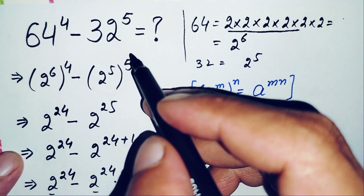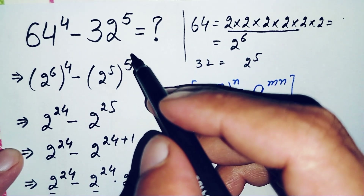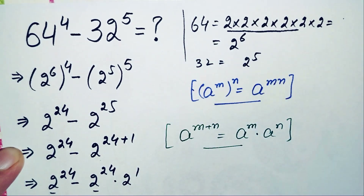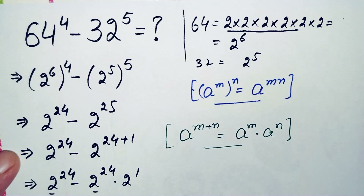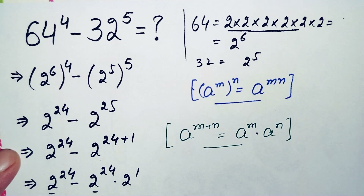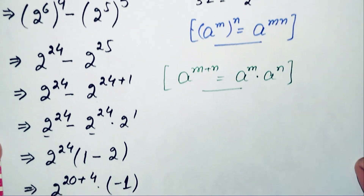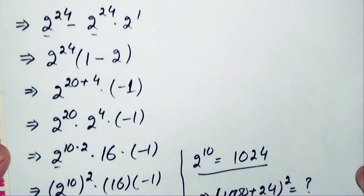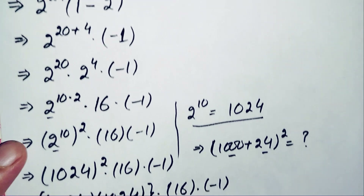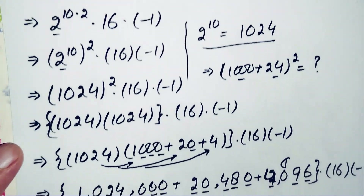So finally, minus 16,777,216 is the answer and value of this nice and interesting simplification math problem. If you liked this video, don't forget to subscribe to my YouTube channel. Thanks for watching.